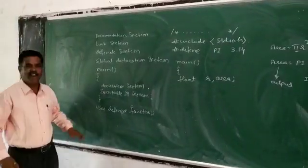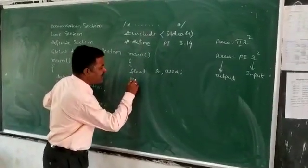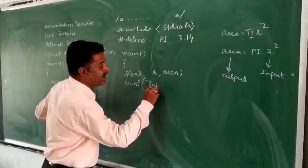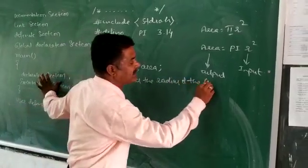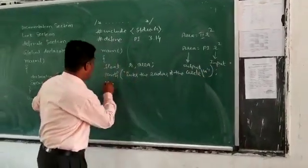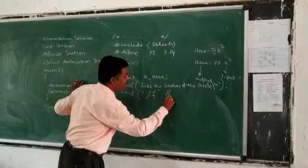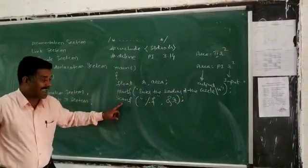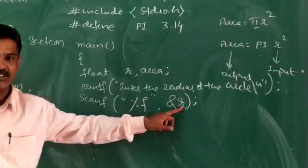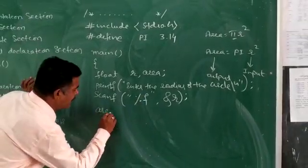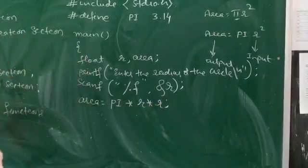Before the execution statement, we must declare all variables used in the program. Next, we use printf to display 'enter the radius of the circle', and scanf with the conversion specifier %f and address of R to take input. Then area is equal to PI * R * R. This is called an expression.